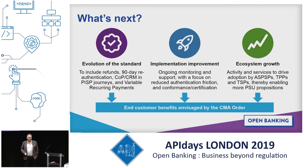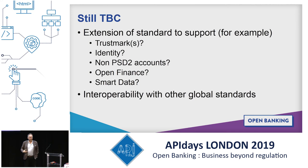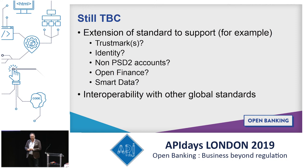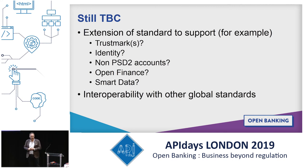We're also looking at working through implementation — helping banks implement APIs better — and I've touched on that around conformance and certification. Lastly, but by no means least, looking at growth of the ecosystem: how can we help drive that growth? Our reason for being is all about the CMA order, and the CMA order is all about end customer benefits. So we need to make sure those end customer benefits are actually delivered. There are also many other things on the horizon: identity — banks are in a great position to provide identity services — non-PSD2 accounts moving into open finance, and smart data extending this model into other sectors like energy and healthcare.